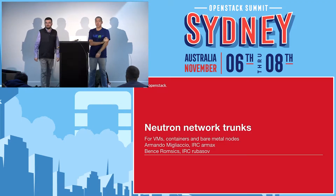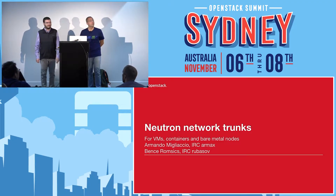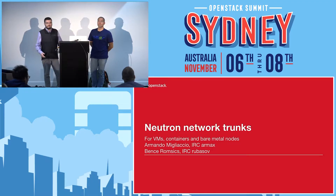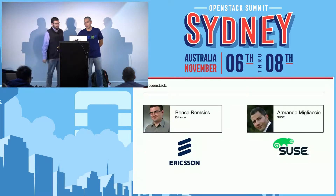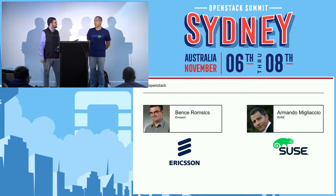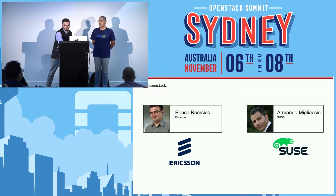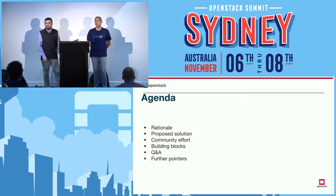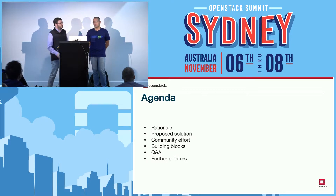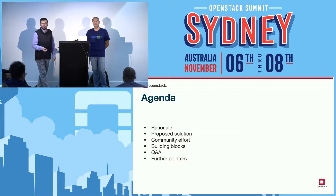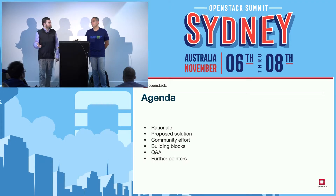Welcome everybody. We are here to talk to you about a Neutron feature, the network trunking feature. Let me introduce ourselves first. My name is Armando Migliaccio, I work for Sousa. And I am Bencer Romcic, I work for Ericsson. This presentation will be a short 10-minute presentation where we will show you what this feature is good for, what is the basic idea that this feature solves, how the implementation came together, and the basic workflow of how you can use trunks.